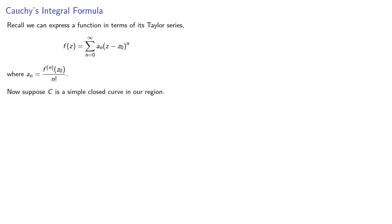Now suppose c is a simple closed curve in our region. Let's assume things and see where this takes us. So let's suppose our curve loops around z0 where we're getting our Taylor expansion around.